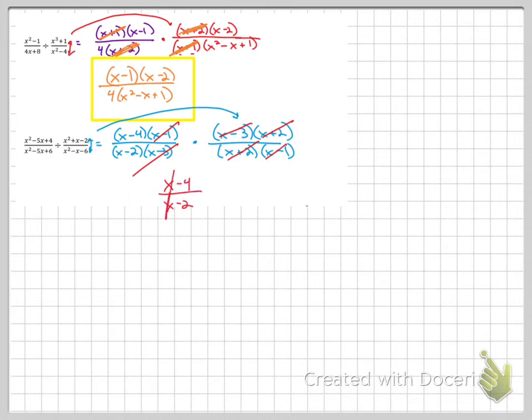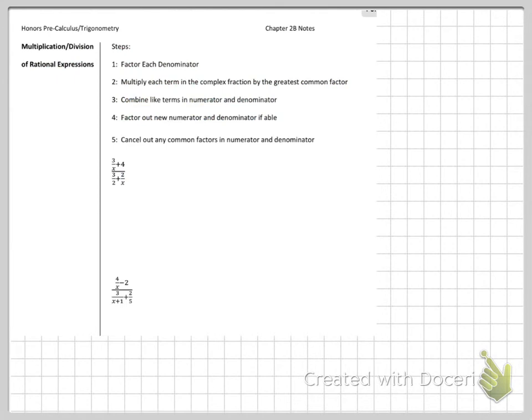I have x minus 4 over x minus 2 left. Remember, you cannot do this. The answer is not 2, right? Because that would reduce to be 2. That is clearly not the answer. This is my answer. Okay, let's see what we have next.